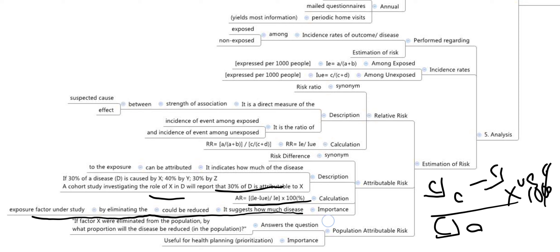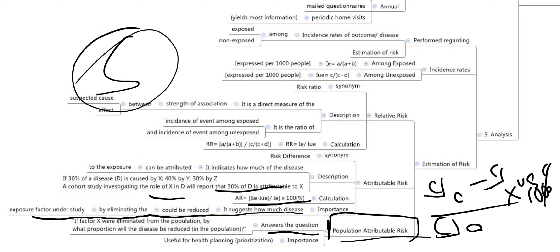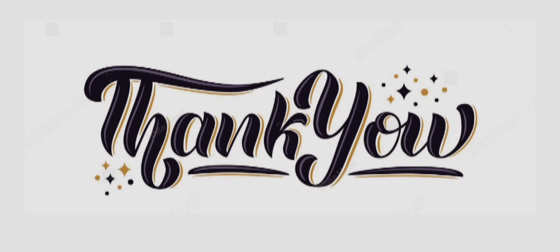Population attributable risk answers questions such as: if we eliminate smoking, by how much will the proportion of lung cancer be reduced in the population? Its importance is that it is used for health planning and prioritization. That is all about cohort study. Please subscribe and share with your friends, as a lot of effort goes into these videos.